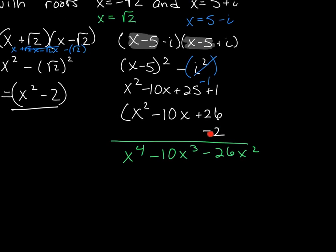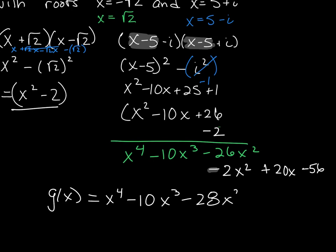All right. So when I go ahead and take the negative 2 and multiply it by x squared, I'm going to get negative 2x squared. Then I take negative 2 and multiply it times 10, and I get a positive 20x. And finally, negative 2 times a positive 26 gives me a negative 56. So that is g(x). g(x) is x to the 4th minus 10x to the 3rd minus 28x squared plus 20x minus 56.